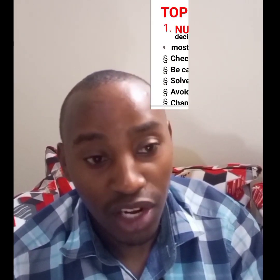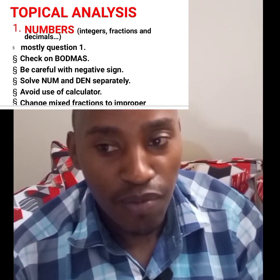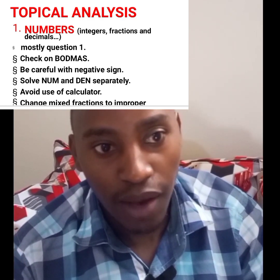Question 1 expects a question on numbers — e.g. integers, fractions, or decimals. You should check on BODMAS, be careful with the negative sign, and solve the numerator and denominator separately. Avoid use of a calculator. Change mixed fractions into improper fractions for easy operation. The final answer must be simplified and given as a proper fraction.